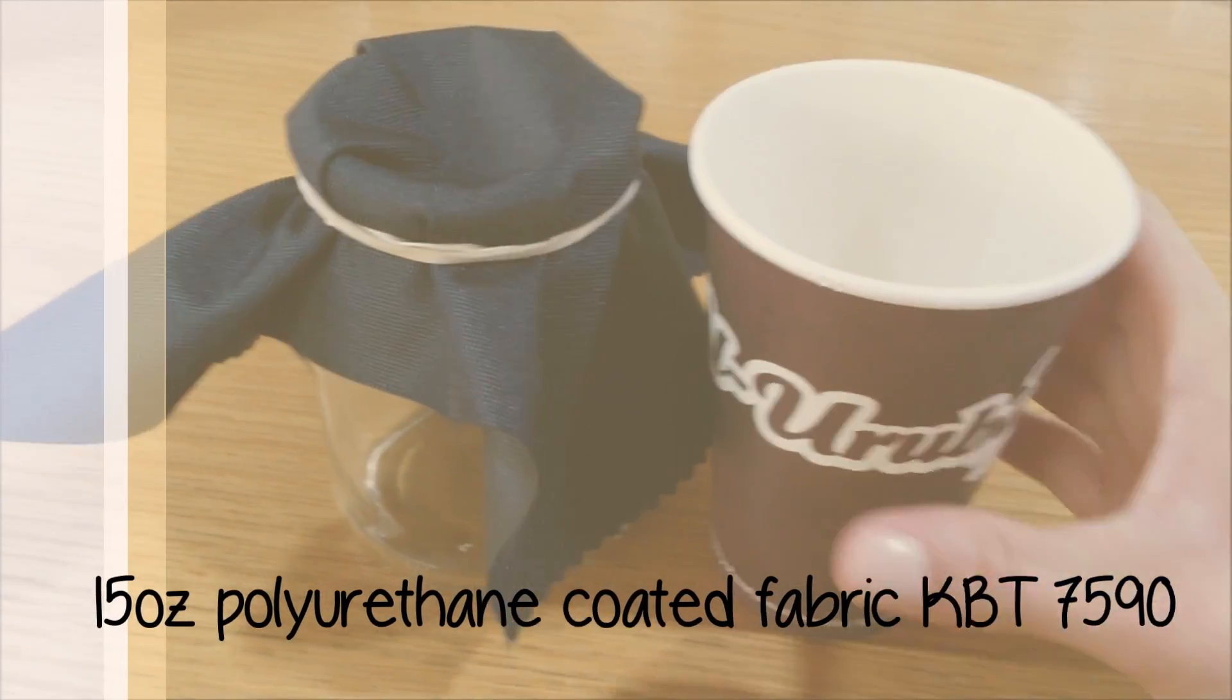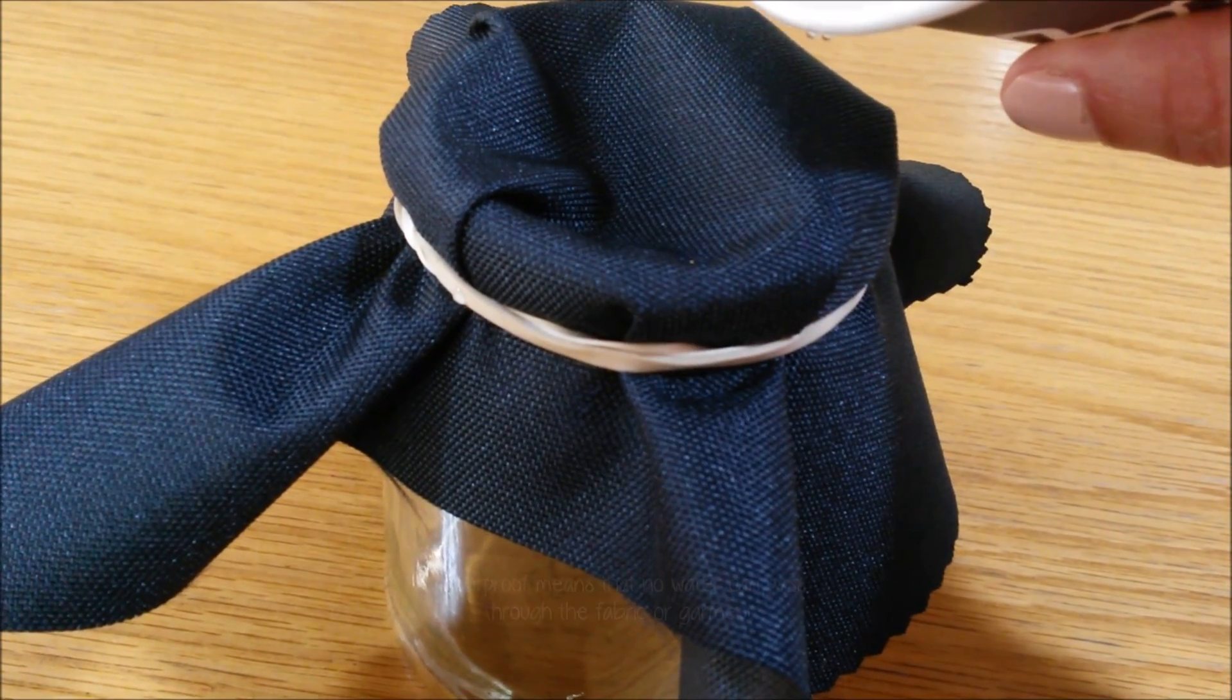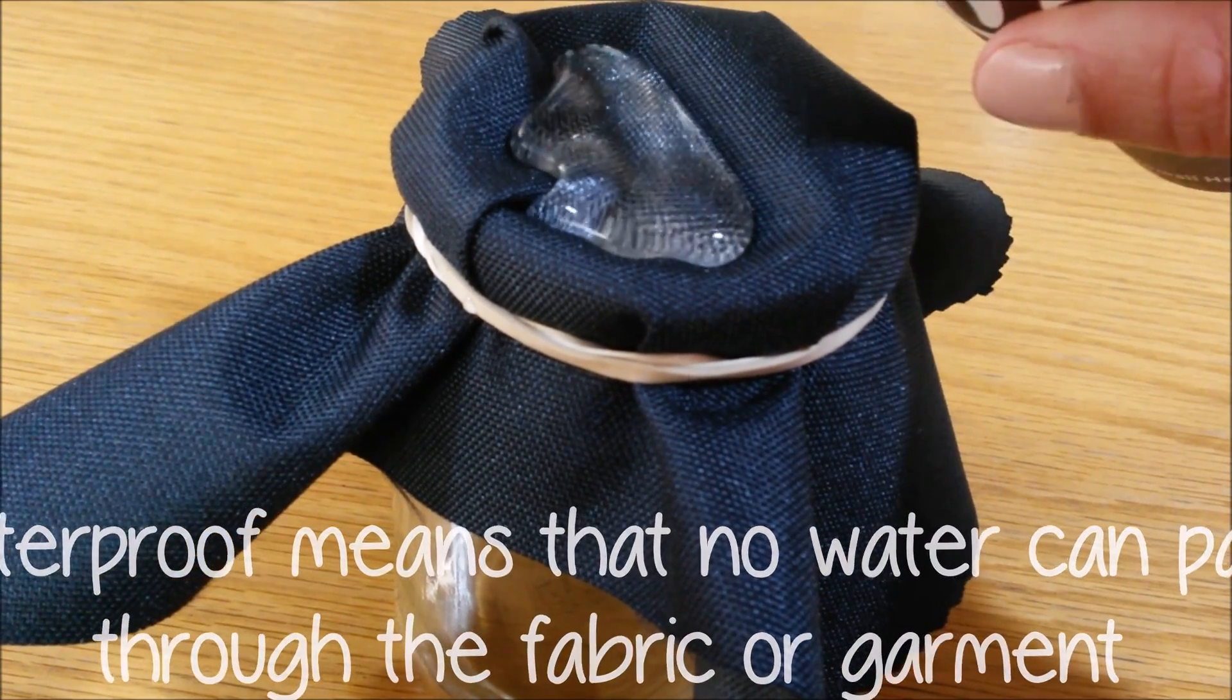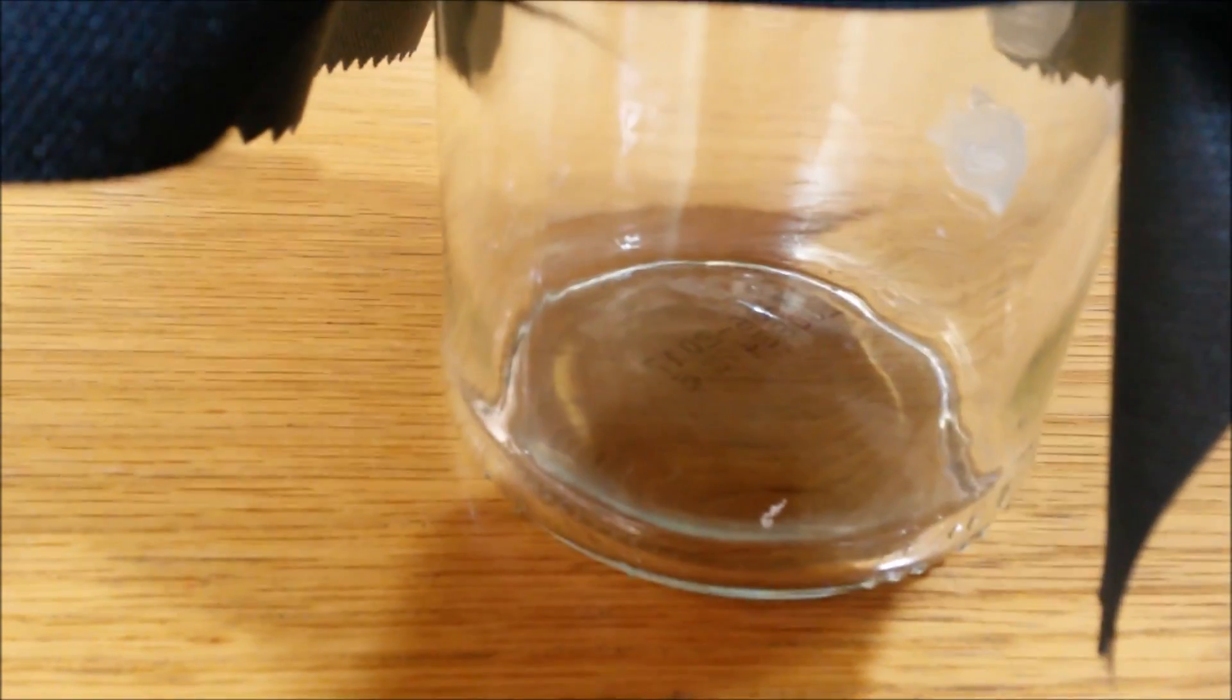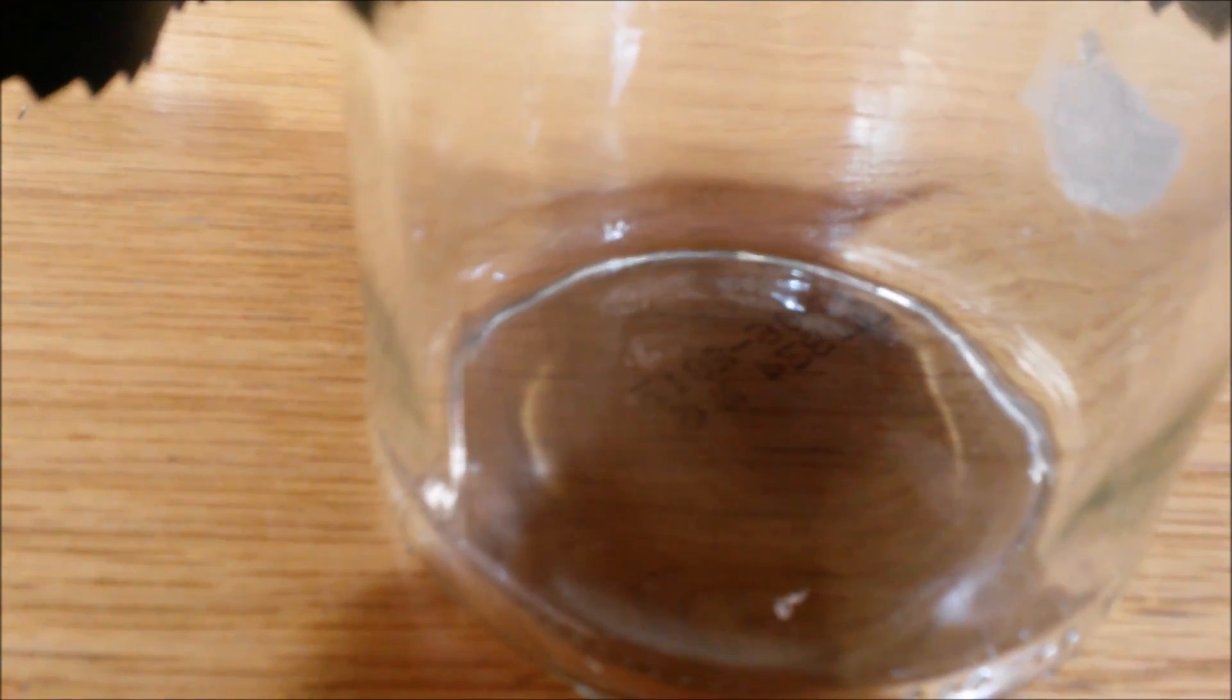A fabric may be called two different things: waterproof or water-repellent. Waterproof means that no water can pass through the fabric, or if we're talking about a constructed garment, that no water should be able to pass from the outside to the inside of the garment. For an item of clothing to be waterproof, it's usually made from a fabric with some sort of coating, such as polyurethane or silicone, or it may be a laminated material.